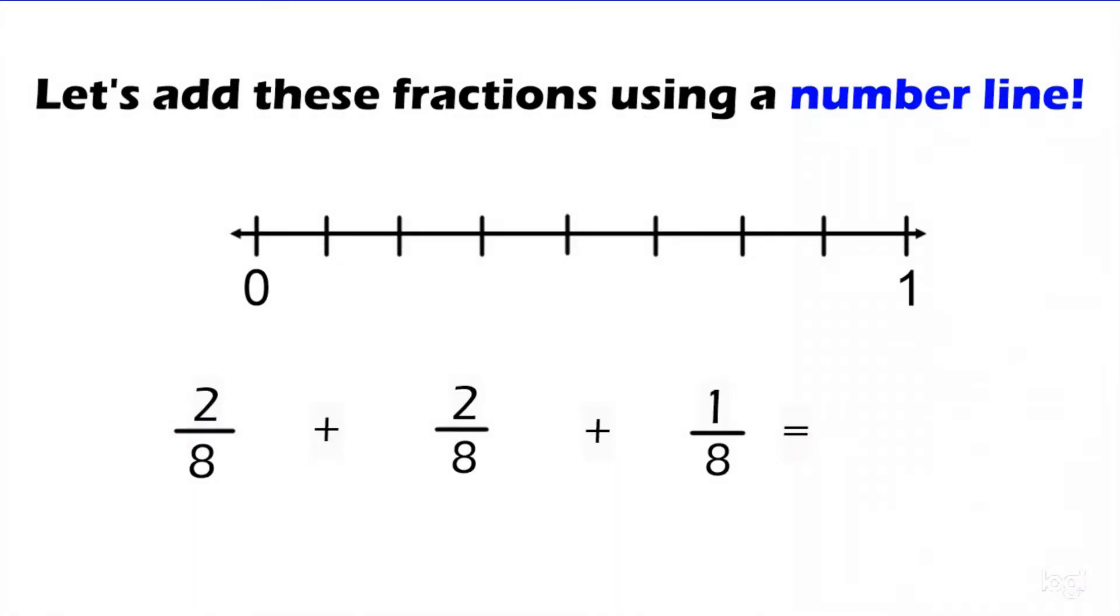And we're going to do the same thing with a number line. So here I have a number line. I have 0 and 1. So if you've seen our number line video, I like to always circle my whole numbers. And I'm going to label. This would be 1 eighth, 2 eighths, 3 eighths, 4 eighths, 7 eighths, and then 1 whole or 8 eighths. 8 eighths is that big one, that fraction that's also equivalent to 1.